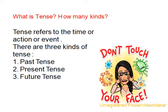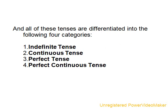All of these tenses are differentiated into the following four categories. One: indefinite tense. Two: continuous tense. Three: perfect tense. Four: perfect continuous tense.